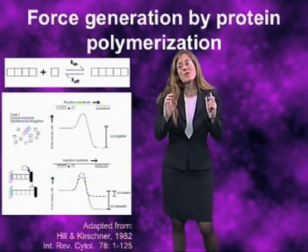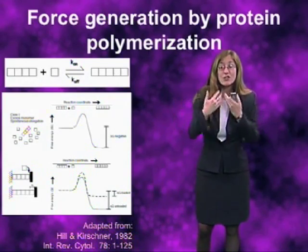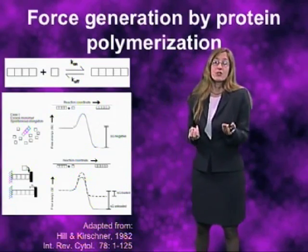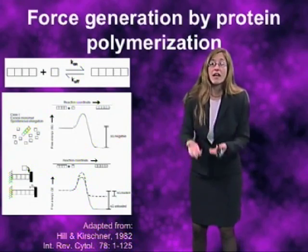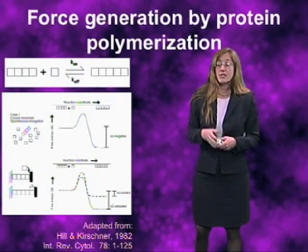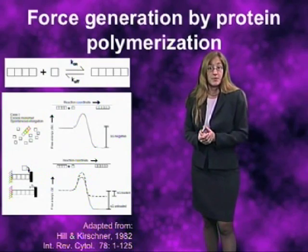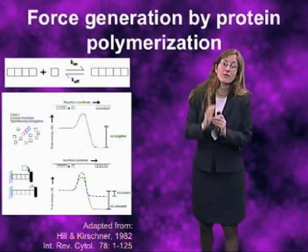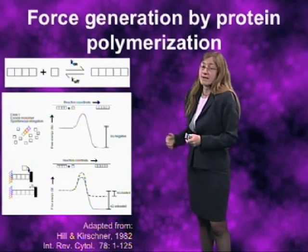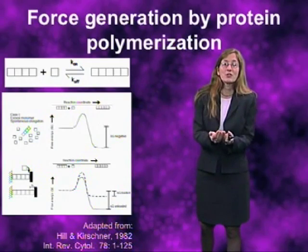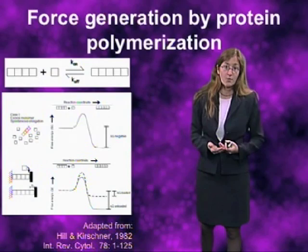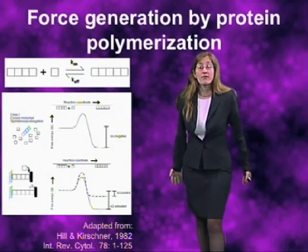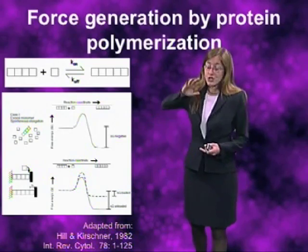Now, in biochemistry, whenever we have a reaction which is energetically favorable, it is possible to couple that favorable reaction to a different reaction which is unfavorable, and allow the favorable reaction to drive the unfavorable reaction forward. This is the way that all metabolic pathways, for example, are able to work. Now, following on that idea, in the context of protein polymerization, because the assembly of the protein is energetically favorable and releases a large amount of free energy, we can couple that free energy to an unfavorable process and drive it forward. And in this case, instead of driving forward a biochemical reaction, what we're going to do is use that energy to drive forward a physical reaction — which is pushing a load.